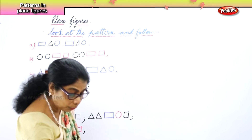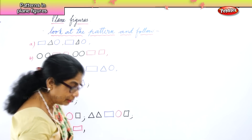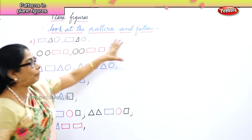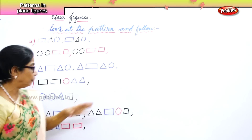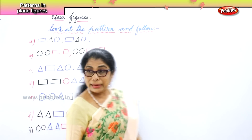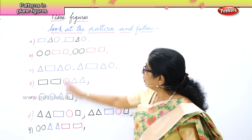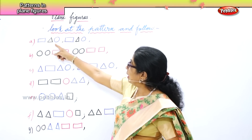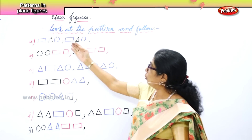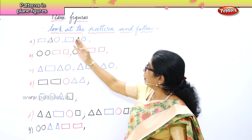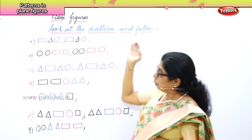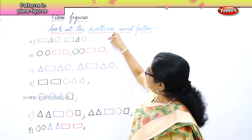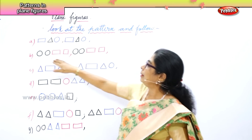Now what we have learnt today is in plane figures: look at the pattern and follow. What are the patterns you have here? First you have rectangle, triangle and circle — so you follow rectangle, triangle and circle. Then what will you do next? You will do rectangle, triangle and next one.